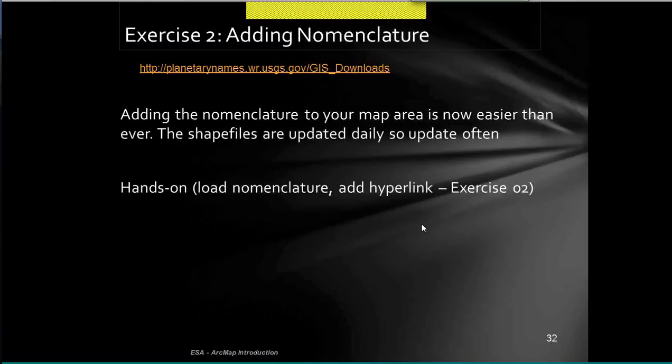The next exercise: we're going to add an existing GIS shapefile. On our IAU and NASA-supported nomenclature site, we have GIS files for all the planets with a lot of information underneath each point. Go to add data, find your exercise directory, and go into exercise two nomenclature, then Mars.